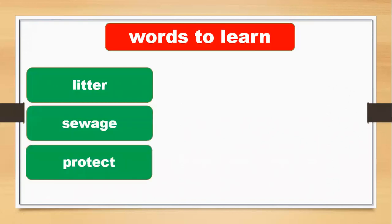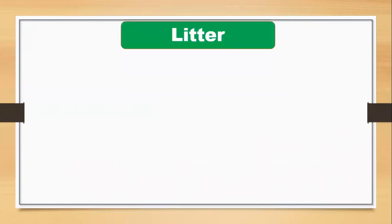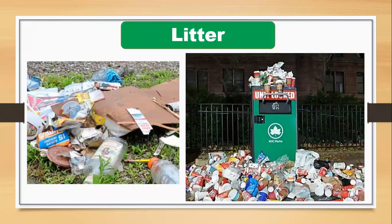In this lesson we learn about three words: litter, sewage, and protect. So here are the three new vocabulary words. Now I'm going to show you with pictures. What is litter? Look at these pictures — these pictures are about litter. People don't care for their environment; they use things and throw them on the streets, on the roads, anywhere.